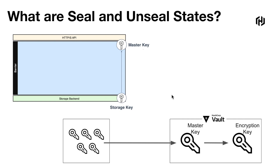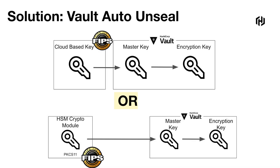As a recap: in order to reconstruct the master key that protects the encryption key, you need a set of keys to make the encryption key available to vault so vault can reach and decrypt information from the storage backend. While Shamir unsealing is definitely an option, let's consider better ways to unseal it — moving from a manual approach to a more automated one. Vault auto-unseal delegates the responsibility of securing the unseal key from users to trusted devices like HSM or cloud services.